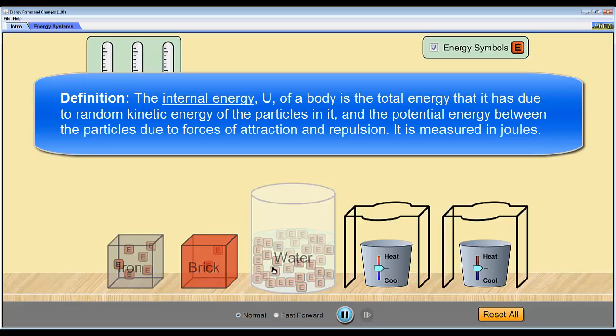And what we can see straight away is that the objects have differing amounts of internal energy. The iron has six of these units of internal energy, the brick has only two, and the water has many.